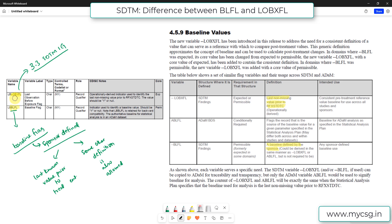So as mentioned, LOBXFL is added newly in IG 3.3. So the conventional baseline flag is BLFL. So the variable that is used to identify the baseline record is meant to be your BLFL. So the definition of baseline for BLFL variable could be sponsor defined.